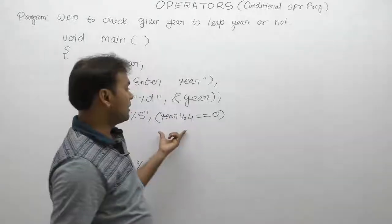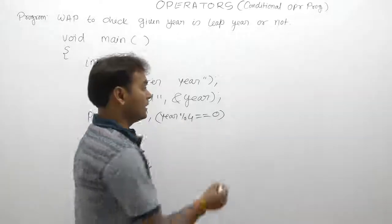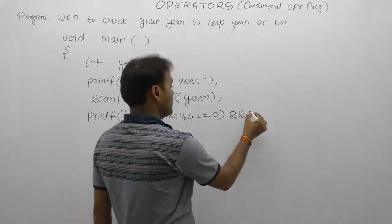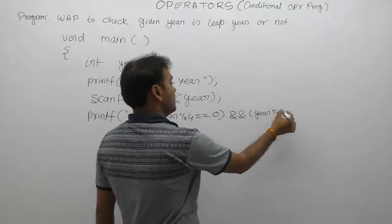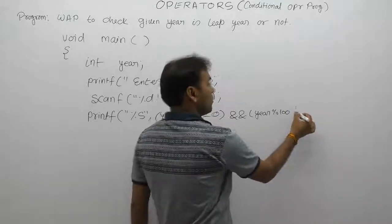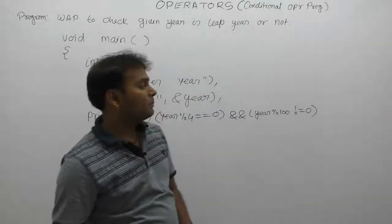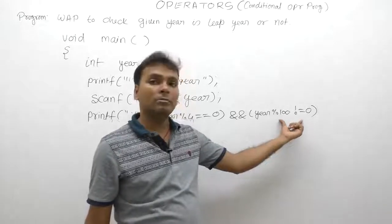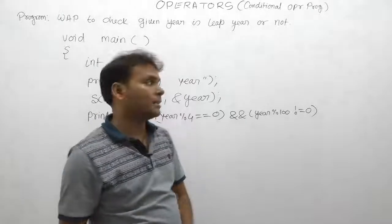What is the mandatory condition? If year is multiple of 4, then it should not be multiple of 100. Then in this case, this condition is mandatory. Therefore second condition we apply: and year modulo by 100 not equals to 0. If year divided by 100 gives remainder non-zero, then you can say year is not a multiple of 100. This case, this condition is satisfied - first condition as well as second condition.